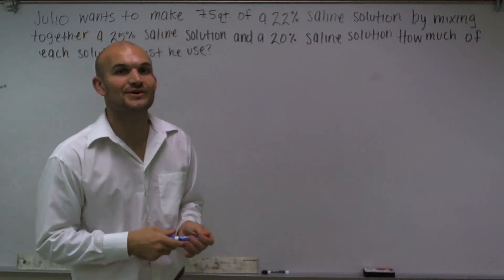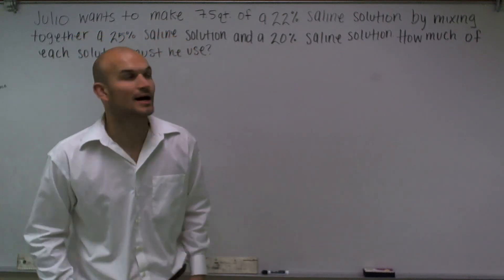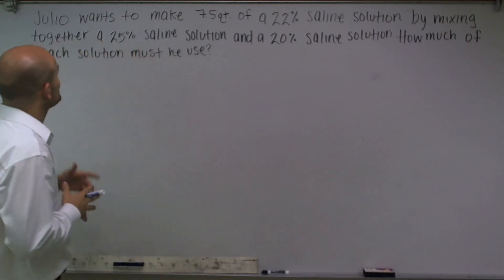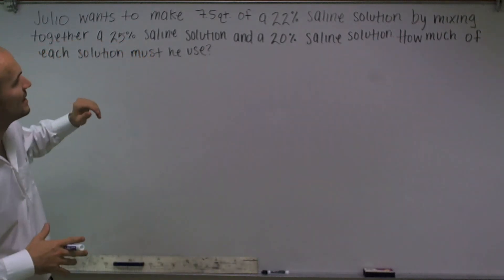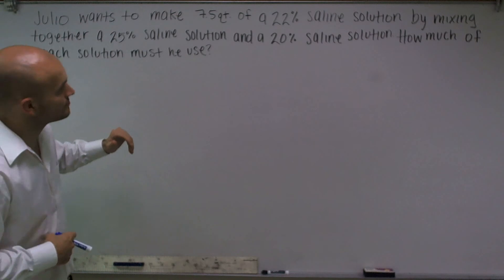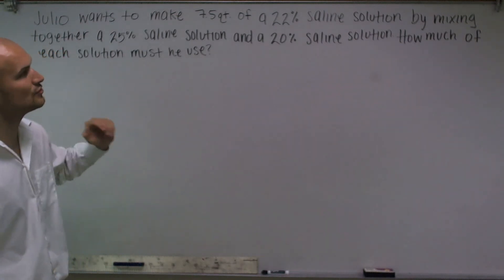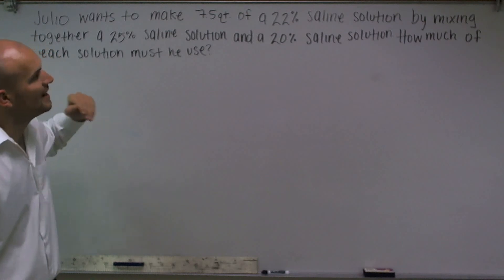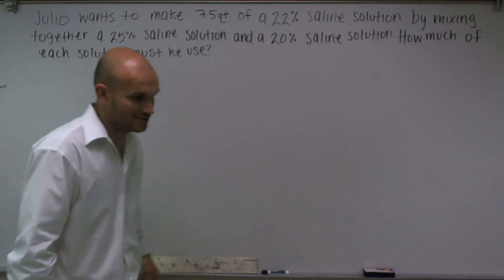OK, welcome. What I'd like to do is show you how to solve this mixture problem. This mixture problem states: Julio wants to make 7.5 quarts of a 22% saline solution by mixing together a 25% saline solution and a 20% saline solution. How much of each solution must he use?